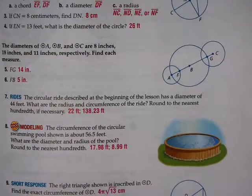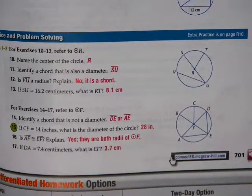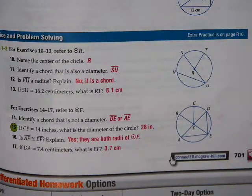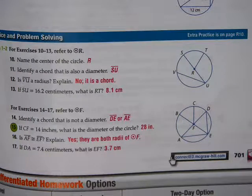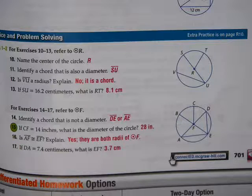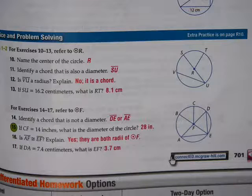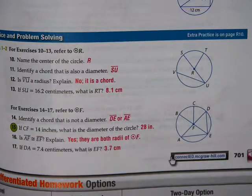10 through 21. I'll just go ahead and smoke you this a little bit quickly. 10 is R. 11 is SU. Segment SU. 12. Nope. It's a chord. 13 is 8.1 centimeters. 14. Segment DE or segment AE. 15 is 28 inches. 16. Yes, they are both radii. So for that. 17 is 3.7 centimeters. Are you acing this so far?